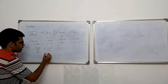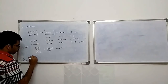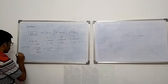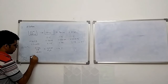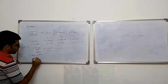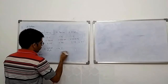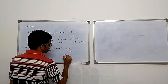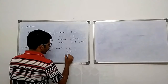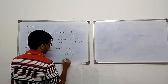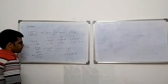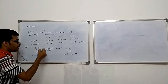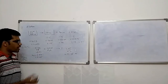Number of moles remains the same, but volume changes so concentration will also change. Number of moles = 0.5 × 0.1 = 0.05. The new volume is 100 + 100 = 200 ml = 0.2 L. So the new concentration = 0.05 / 0.2 = 0.25 molar. The concentration has decreased. That is why we say on diluting a solution or adding water, concentration decreases.